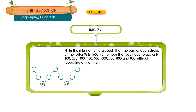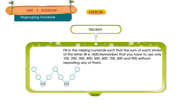Trick C: Fill the missing numerals such that the sum of each stroke of the letter W is 1,600. Remember that you have to use only 100, 200, 300, 400, 500, 600, 700, 800, and 900 without repeating any of them.